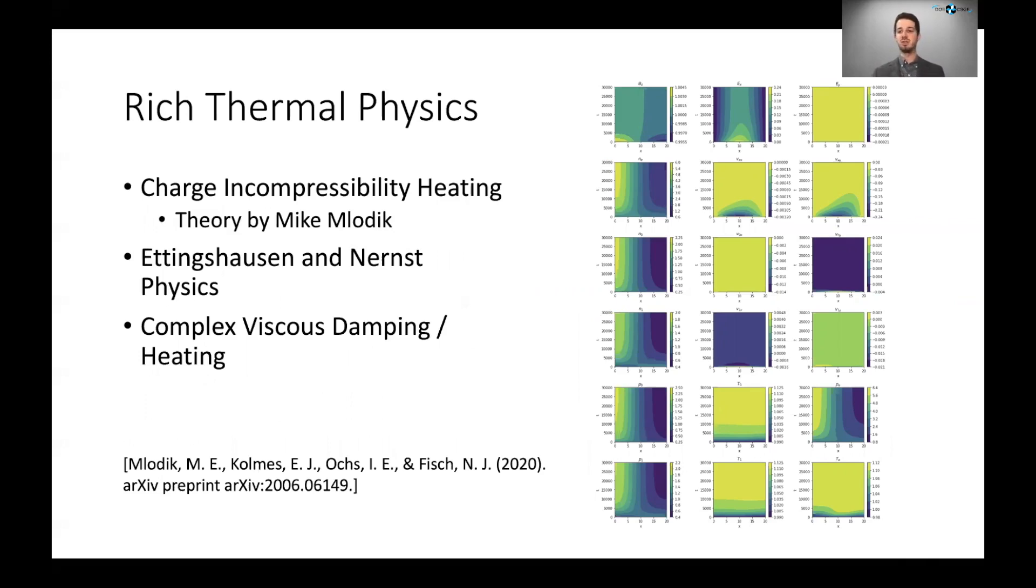And we've been able to explore this with the new code. There's also rich Ettingshausen and Nernst physics, which relate the temperature gradients and the resulting frictions you get, and as well as complex viscous damping and heating effects in these plasmas. And you can find some details of that thermal physics in another recent preprint.